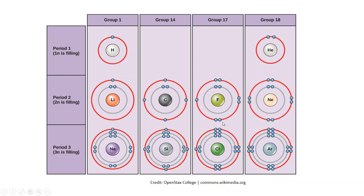Fluorine and chlorine both have seven electrons in their outer shell, so they really want one more to make it full. Carbon is one of our more reactive atoms because it has four electrons in its outer shell, allowing it to form four different bonds. Atoms with just one electron in the outer shell tend to donate or give away that electron.